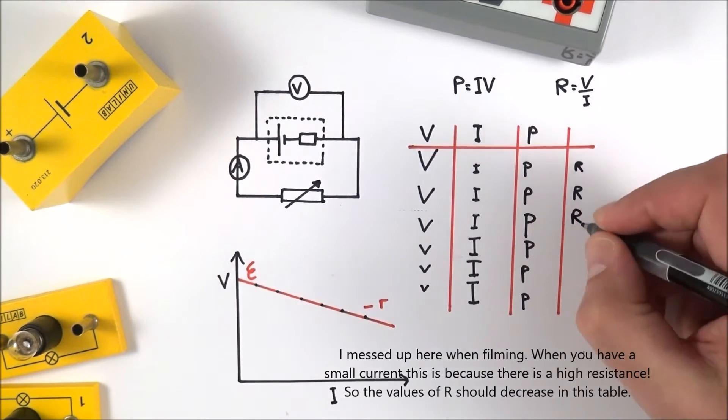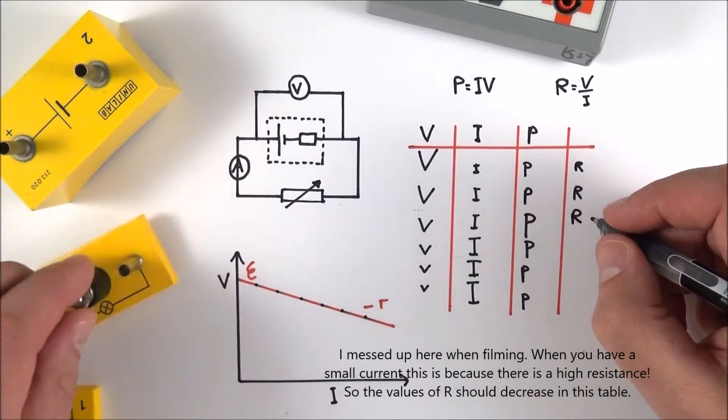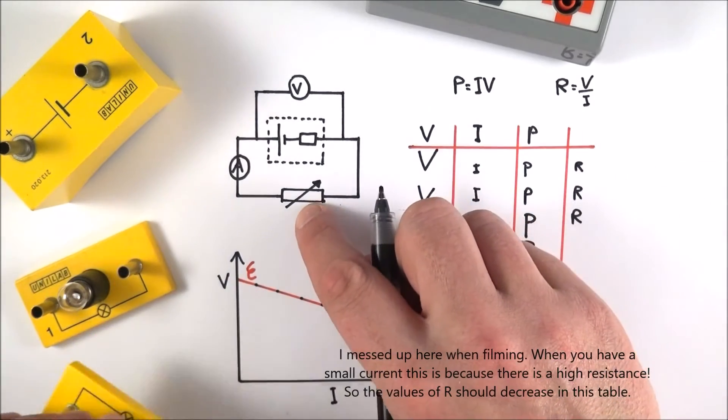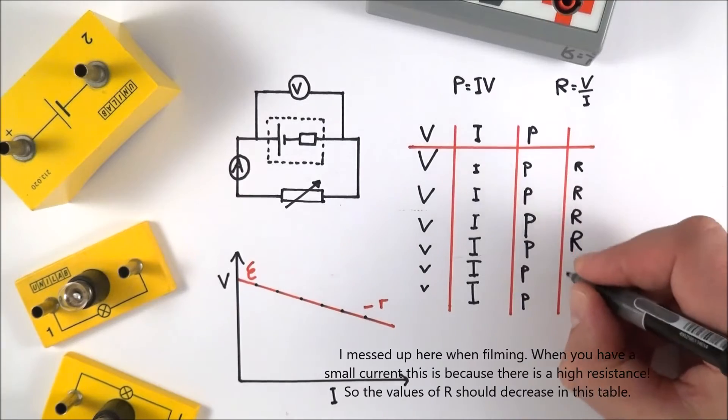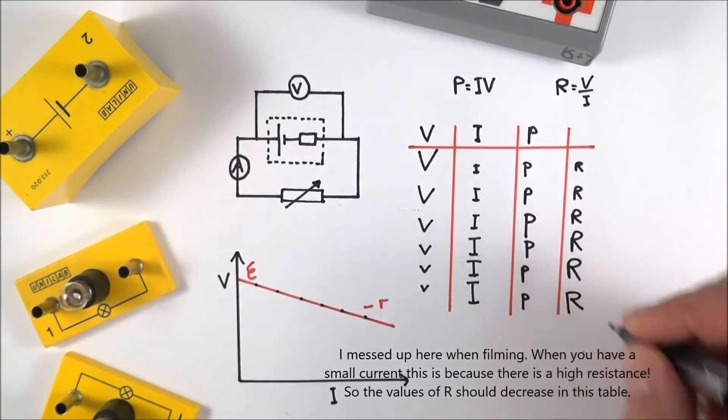As we have more things in that circuit, perhaps more cells, or we're increasing the resistance using this variable resistor, the resistance gets bigger and bigger.